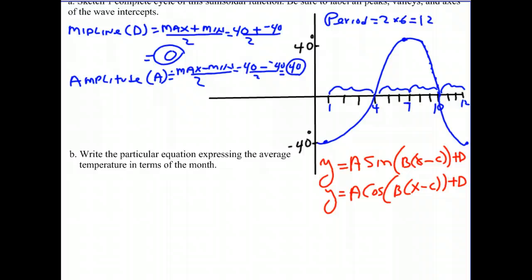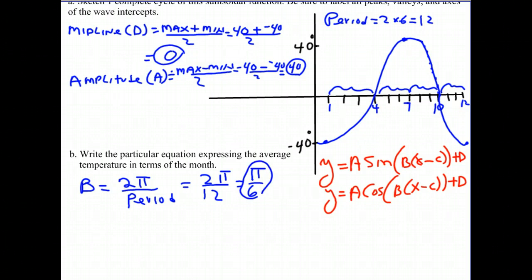We have our A and D. Let's look for our B. The period was 12, and B is equal to 2 pi divided by the period. B tells us the number of cycles in 2 pi radians. We divide 2 pi radians by 12 and get pi over 6 for a value of B. All these problems we do in radians, not degrees.